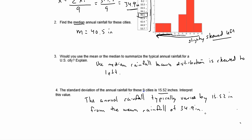So if you take the nine cities, the annual rainfall typically would be varying by 15.52 inches from the mean of 34.9. And that's what you have, and that's what it means by standard deviation.